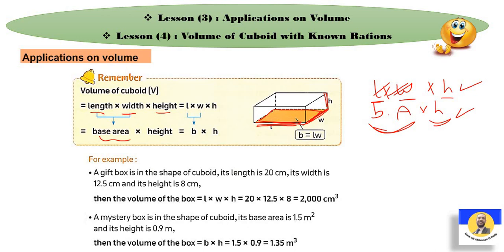For example: a gift box is in the shape of a cuboid. Its length is 20, width is 12.5, height is 8. So how can we find the volume? We will do length times width times height: 20 times 12.5 times 8. It will be 2000 cm³.